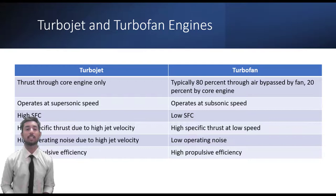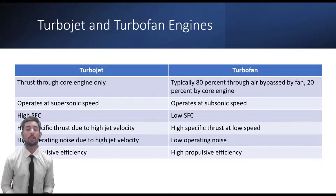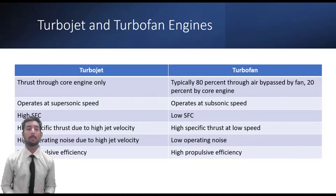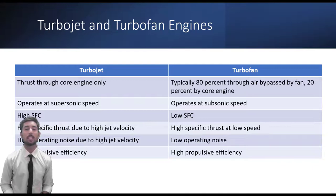Turbojet engines have been used in isolated cases to power vehicles other than aircraft, typically for land speed record attempts where vehicles are turbine-powered, more commonly using a turboshaft engine — a development of the gas turbine where a turbine drives a rotating output shaft, common in helicopters. Turbojets were used on long-range aircraft like the TU-114 that spent long periods travelling supersonically. Turbojets are still common in medium-range cruise missiles due to their high exhaust speed, small frontal area, and relative simplicity, and are used on some supersonic fighters such as the MiG-25.